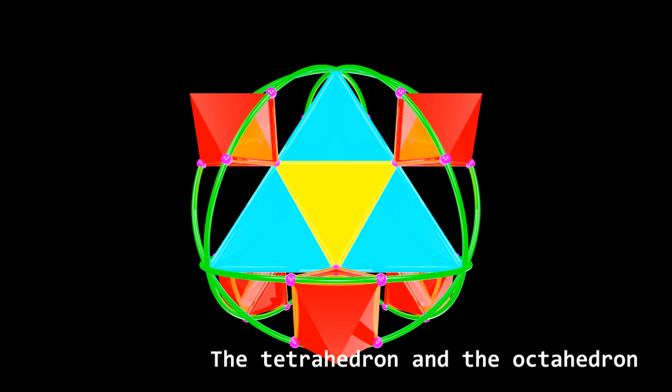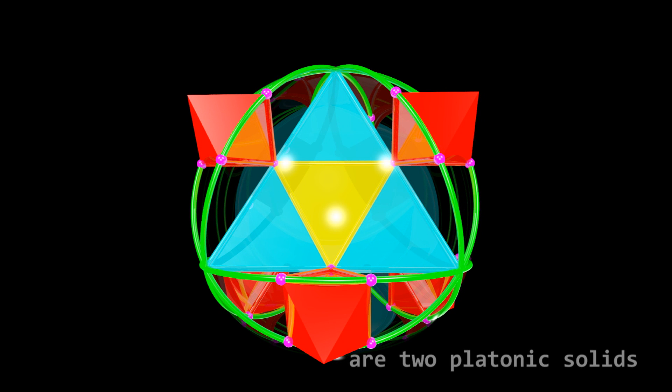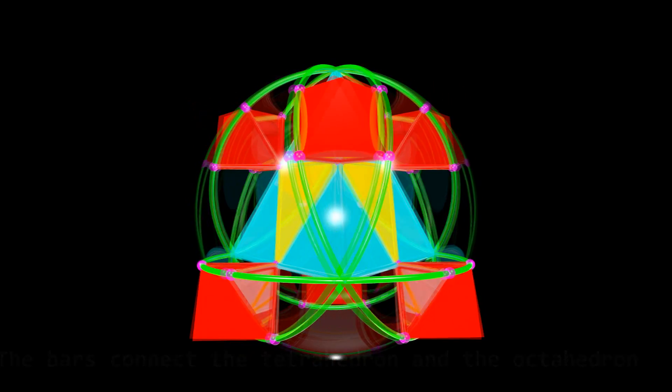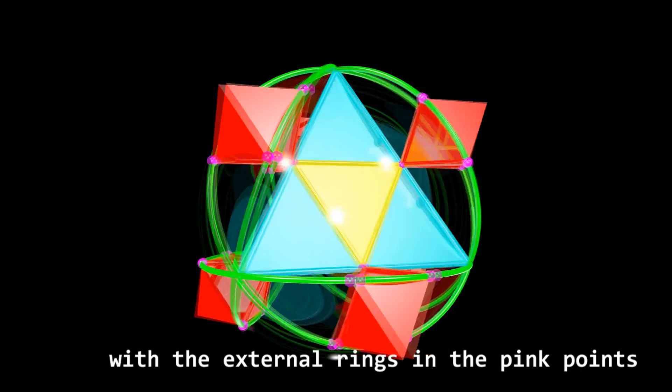The tetrahedron and the octahedron are two Platonic solids. The bars connect the tetrahedron and the octahedron with the external rings in the pink points.